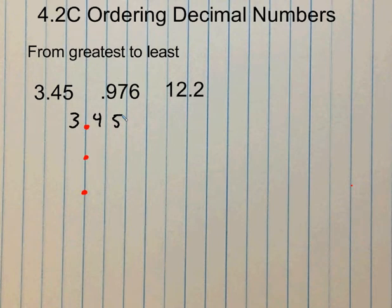On my next number, 976 thousandths, I have three place values to the right of the decimal. So I'm going to write my 976 thousandths.